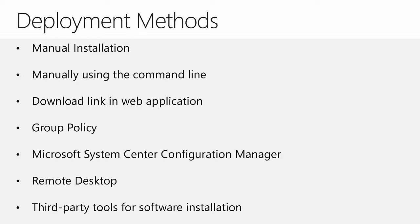Group Policy is a feature of Active Directory for software installation. Software can be automatically installed or made available for manual installation. The benefit of using Group Policy is that users do not require local administrator rights to install software. Microsoft System Center Configuration Manager is a tool for managing PCs and servers and keeping software up to date, and it can also be used to deploy Dynamics 365 for Outlook. You can also remote desktop into your user's computer, and there are third-party tools that provide features similar to System Center Configuration Manager.